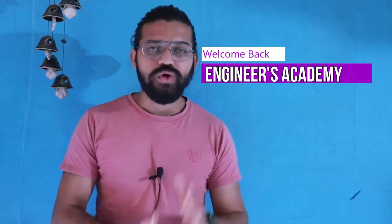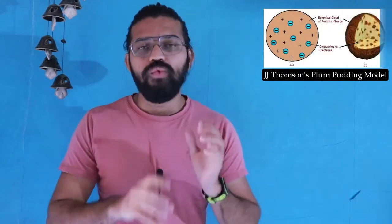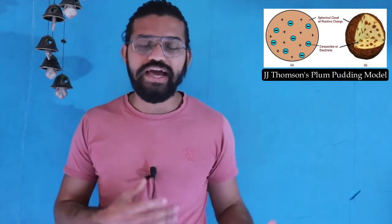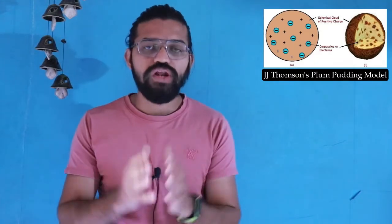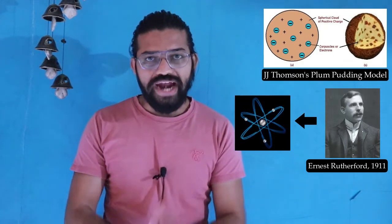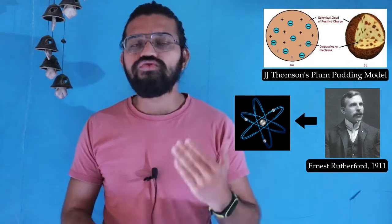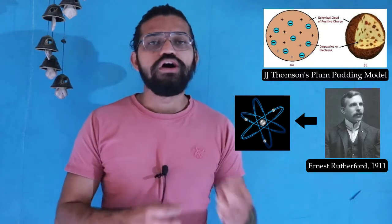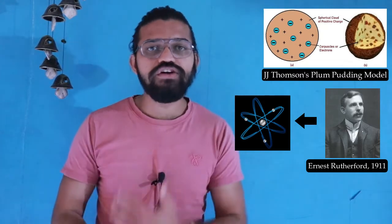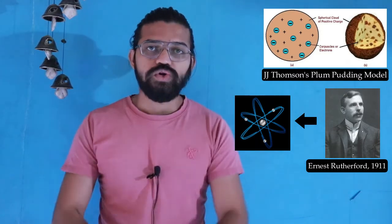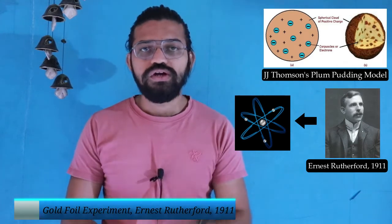Hi everyone, welcome back to another video of Engineers Academy. In our previous video we saw JJ Thomson's plum pudding model, which was widely accepted in the 19th century. Scientists began experimenting on that model, but in 1911 Ernest Rutherford came up with another experiment and derived a nuclear model of an atom, identifying some faults in Thomson's plum pudding model. He conducted a gold foil scattering experiment and found a different structure of the atom.